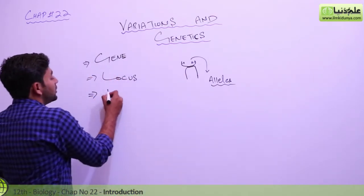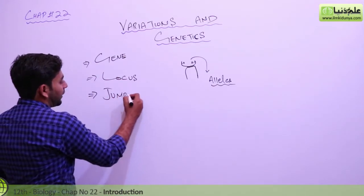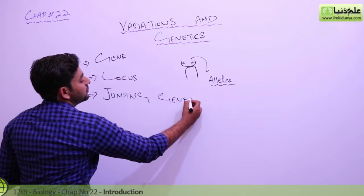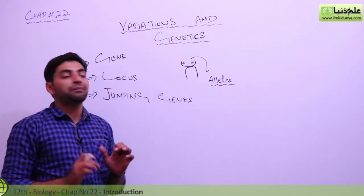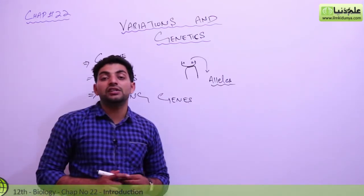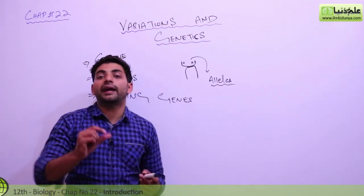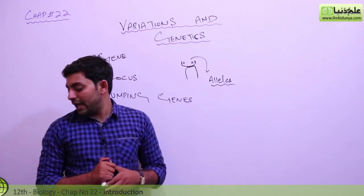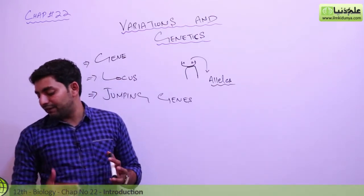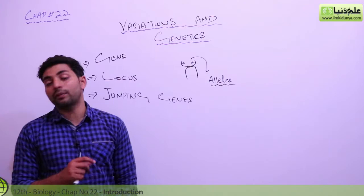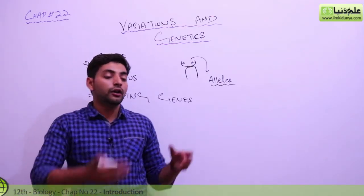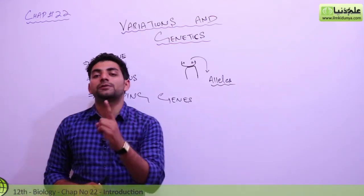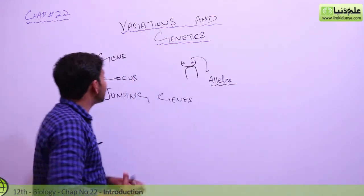We are talking about jumping genes. Jumping genes are such genes that don't stick to one locus, they are jumping genes. They hop to different loci on the same chromosome or they will leave their chromosome and go to some other chromosome, jumping on the other side. It will not sit on any one locus.